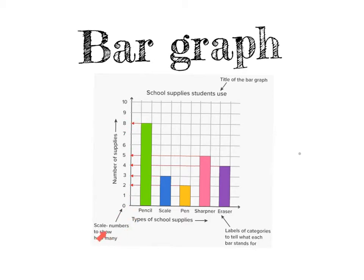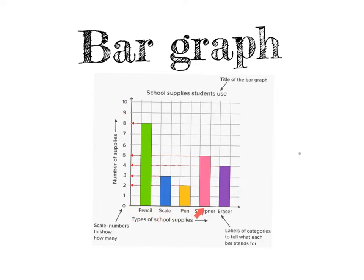Also remember that when you draw a bar graph it needs to have a title, it needs to have labels of categories, you need to have a label for your x and your y axes, and the scale number showing how many people have a pen, a sharpener, an eraser, etc.